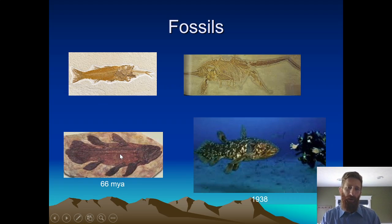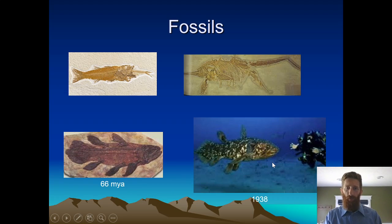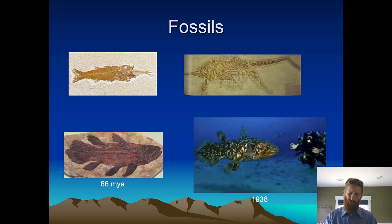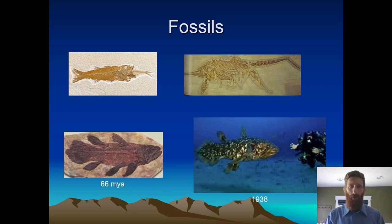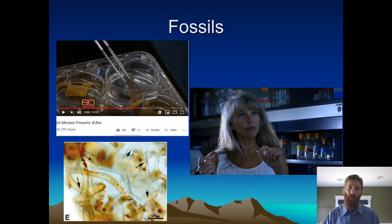This is called a coelacanth. It disappeared from the fossil record 66 million years ago, and so scientists thought they were extinct until 1983, when all of a sudden a diver off the coast of Africa found a fish that looks very similar to the fossil of the coelacanth. So the fossil record is not complete right now. Does that totally demolish all the evolutionary scientists' arguments? No — they actually have an open mind. They're far more open-minded than most Christians are. They'll say, huh, that's interesting — let's go investigate that.